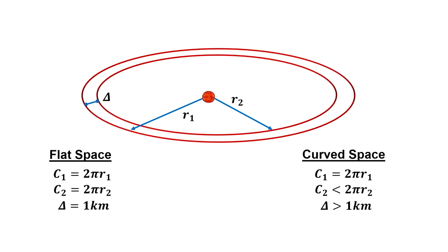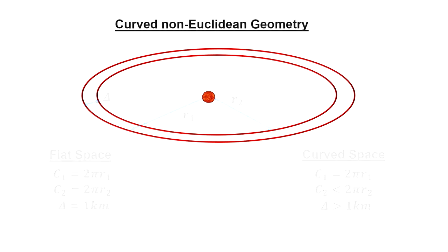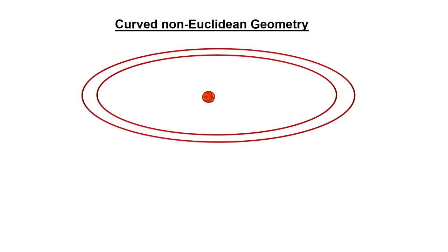Which means that the distance between the circumferences would be greater than the one kilometer difference in the radii, but only a little.